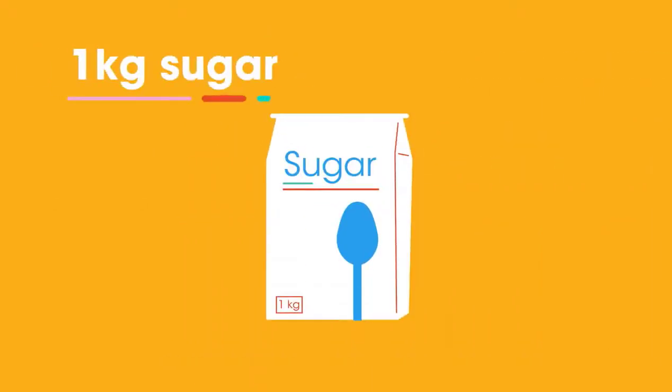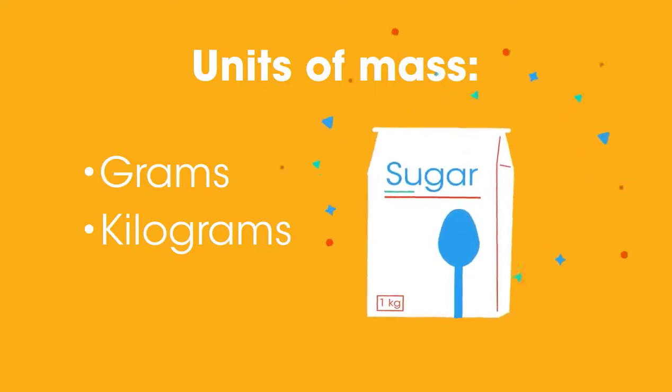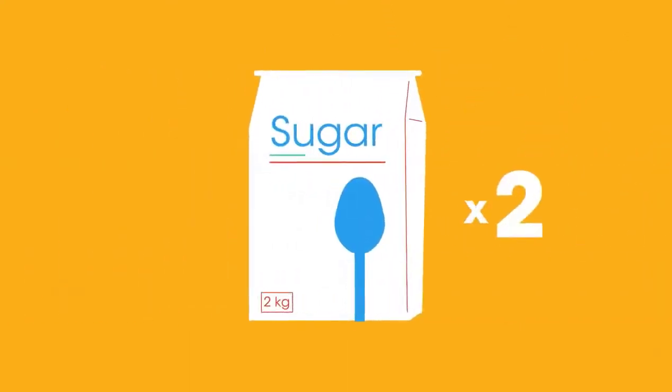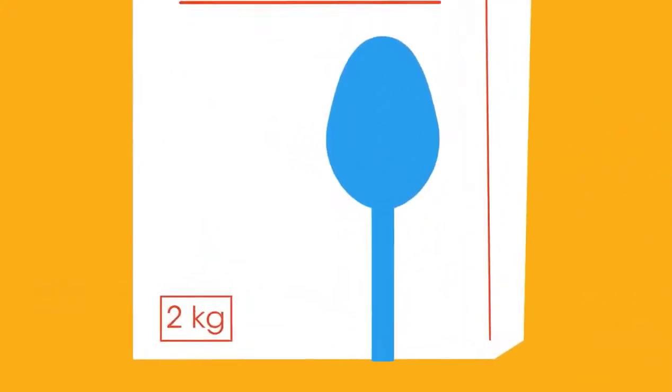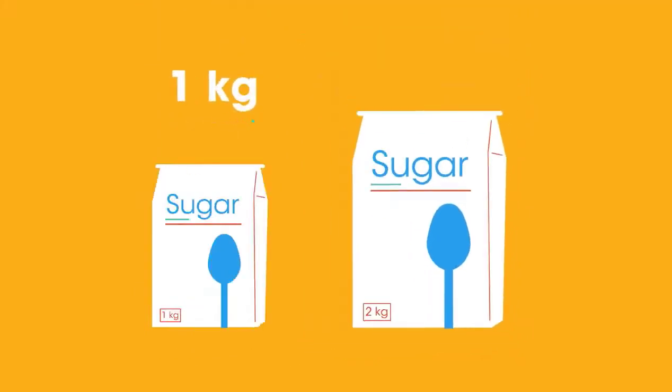This is a 1 kilogram bag of sugar. Grams and kilograms are units of mass. Mass is a measure of how much stuff is in something. This bag contains twice as much stuff. It has a mass of 2 kilograms. It would be wrong to say the bag weighed 1 kilogram or 2 kilograms, as weight is a force caused by gravity.